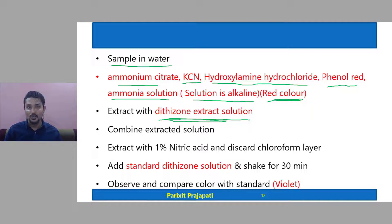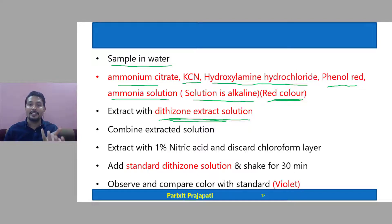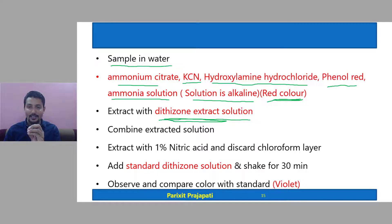The dithizone extract solution contains dithizone in chloroform. The sample with all reagents is placed in a separating funnel, and the dithizone extract solution is added. The dithizone-chloroform layer separates and extracts lead from the sample. This extraction is performed several times.